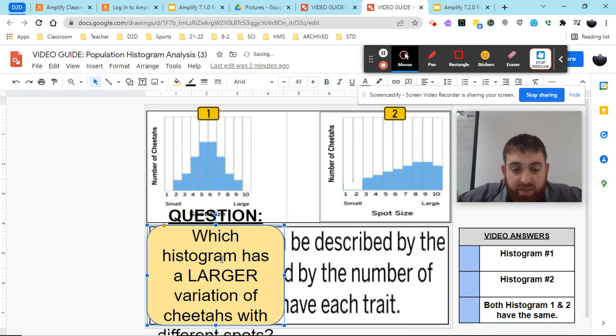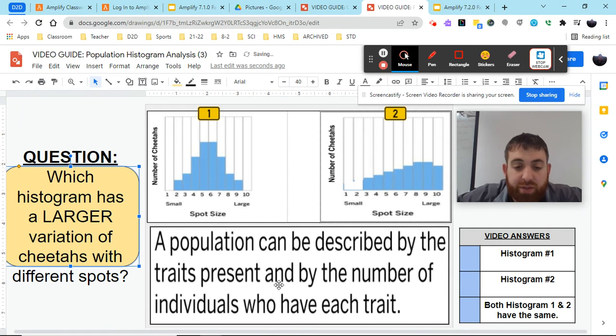We know this because we can describe the traits present by the number of individuals that have each trait. We see there are no individuals with these two traits. We see there are no individuals with these two traits. We see we have individuals with these eight. We see we have individuals with these eight. Therefore, they have the same.